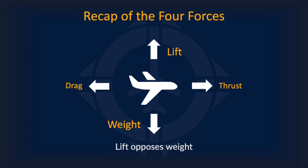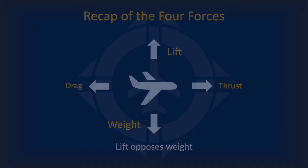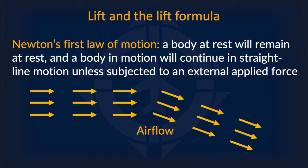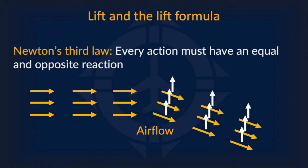In our next section, we will discuss lift and how it is generated by the wings. To explain how an airplane actually generates lift, we must again turn to Newton's laws of motion. The first law states that a body at rest will remain at rest, and a body in motion will continue in straight-line motion unless subjected to an external applied force. This shows how wind in the sky, without any force acting on it, will always flow in one direction. If the wind were somehow deflected downwards, an external force must have caused it to change direction. By Newton's third law, deflecting wind downwards must generate a reactionary force upwards — thus, by directing wind downwards, we can create a reaction that produces lift. This is what a wing actually does.